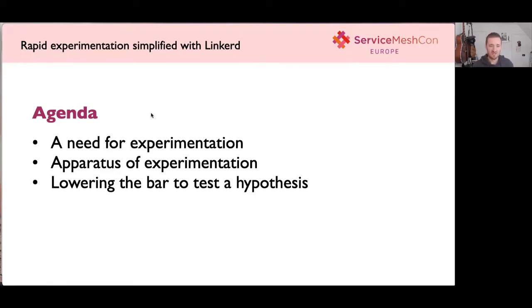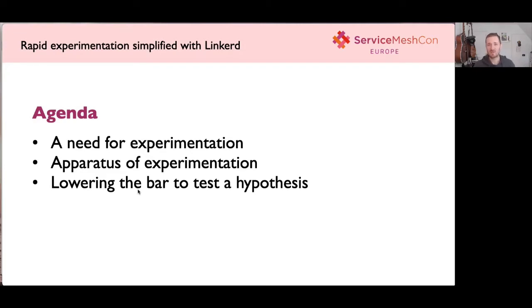To be able to perform these low-cost experiments to determine whether the feature change is going to cause an application impact. The agenda for today: we're going to talk about why is there a need for experimentation, why do firms invest in tooling, and why are things like Linkerd becoming extremely exciting for very low-bar-to-entry ways of measuring those experiments and testing hypotheses. The apparatus of that experimentation — the technical side of how is this implemented, how difficult is it to use, and what are the kind of things I can do — is that A-B testing, chaos testing, canary testing? And thirdly, what is the implication of lowering the bar-to-entry on this kind of form of experimentation?